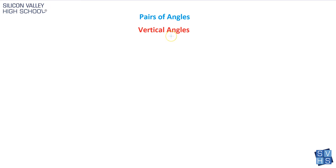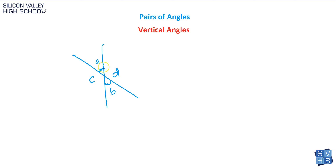The last key relationship is vertical angles. Whenever you have an X shape, any angle that is opposite another angle across that X forms a vertical pair. For example, if you have A and B across from each other on the X, they are vertical angles — and vertical angles are always congruent, meaning they are equal. If you also label C and D, then C and D are vertical angles and also equal each other. A and C, however, are not vertical angles; they are actually a linear pair. B and D are likewise a linear pair.